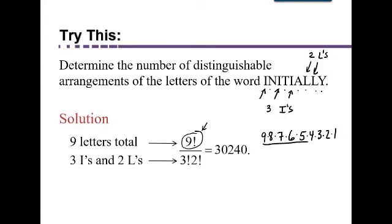divided by three times two times one times two times one. So one thing you could do, because sometimes calculators get a little fussy when the numbers get too big, one thing you can do is write this out, and then cancel,